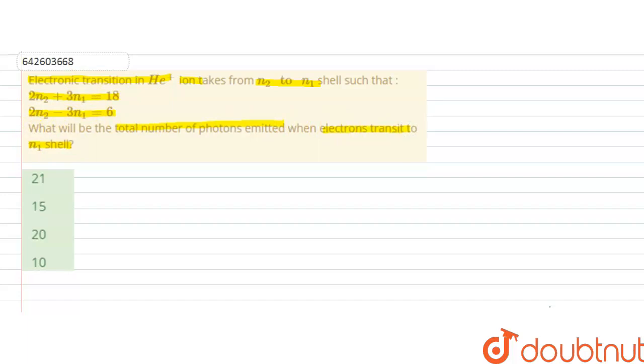In this question it is given that an electronic transition in helium ion takes place from N2 to N1 and the relation between N2 and N1 are given. We have to calculate the total number of photons emitted when the electrons transit from N2 to N1.